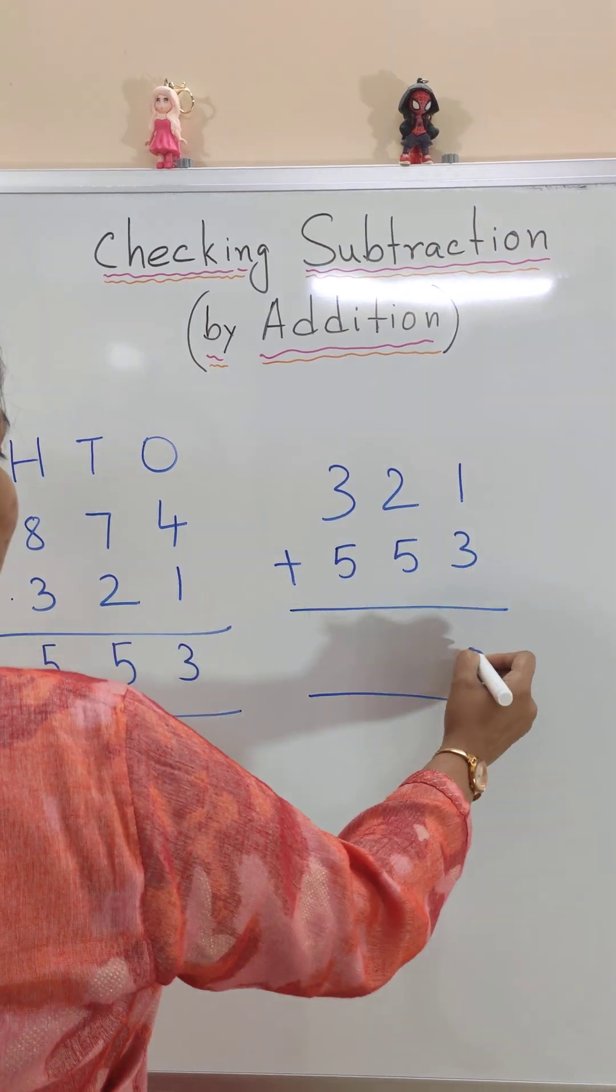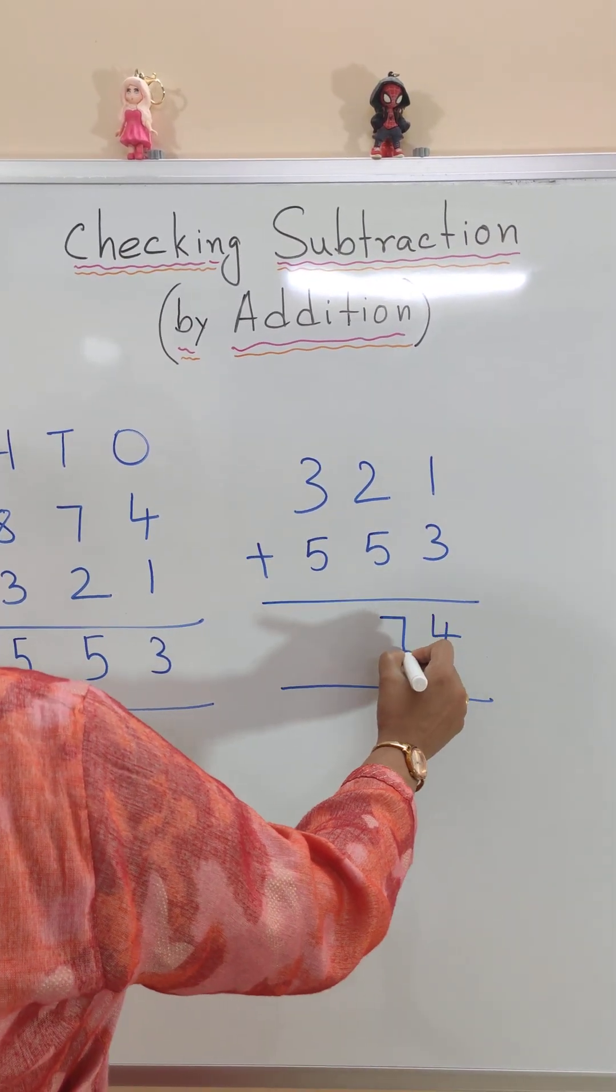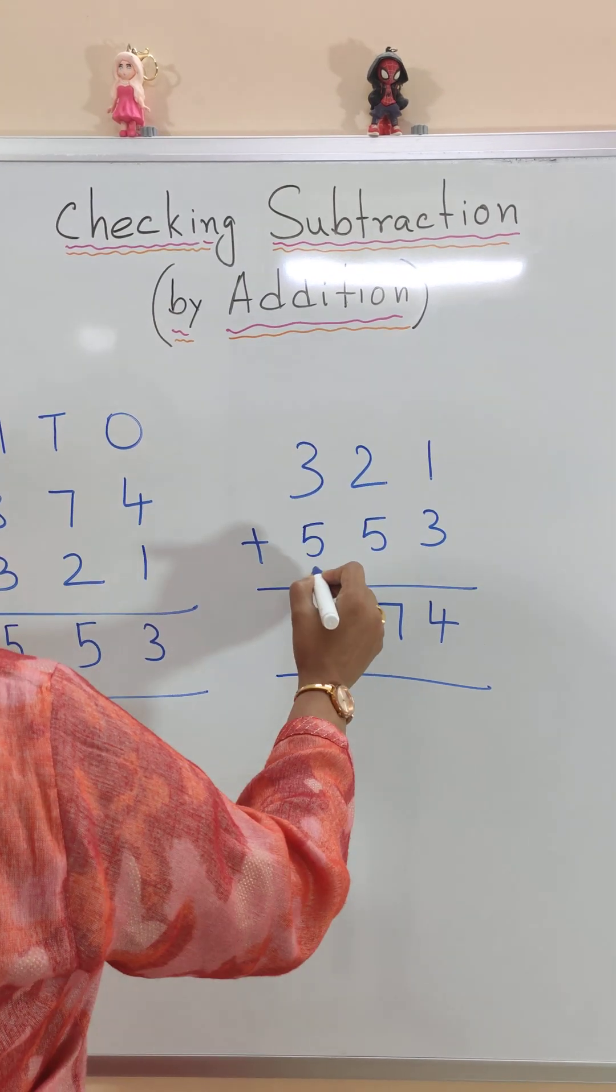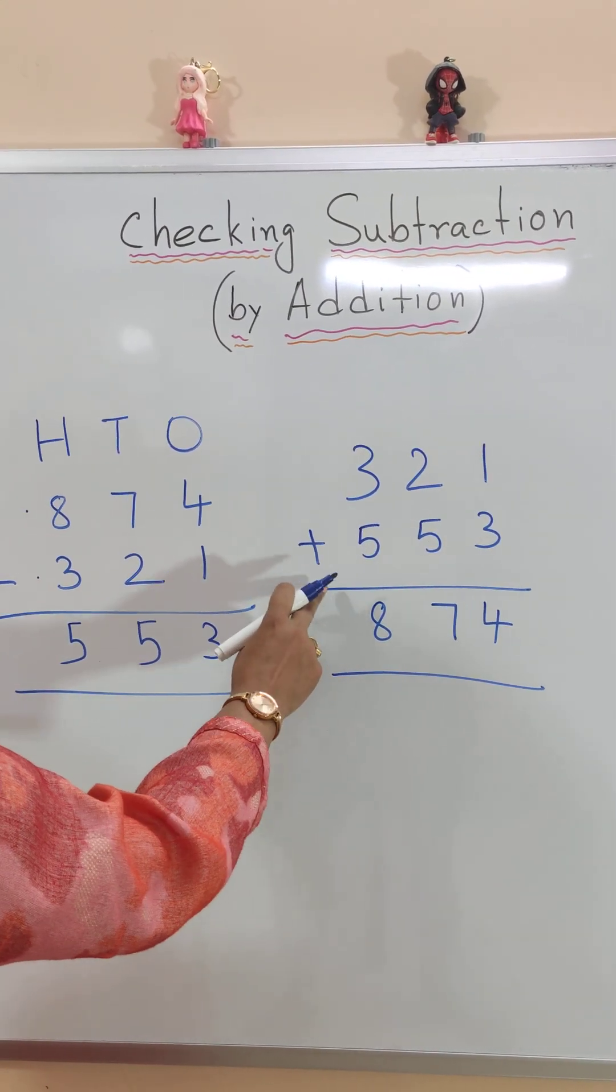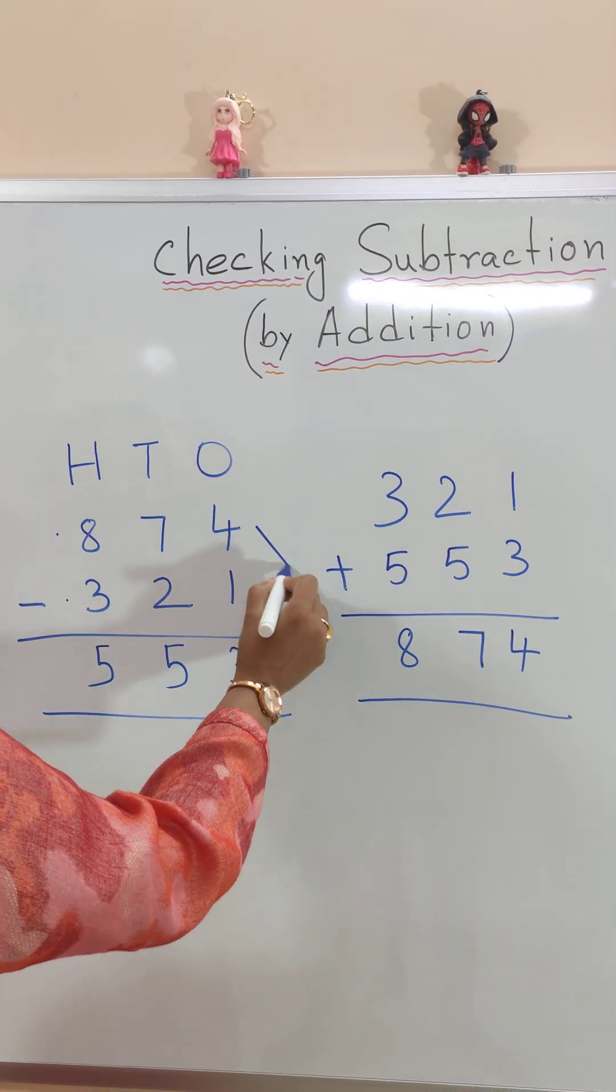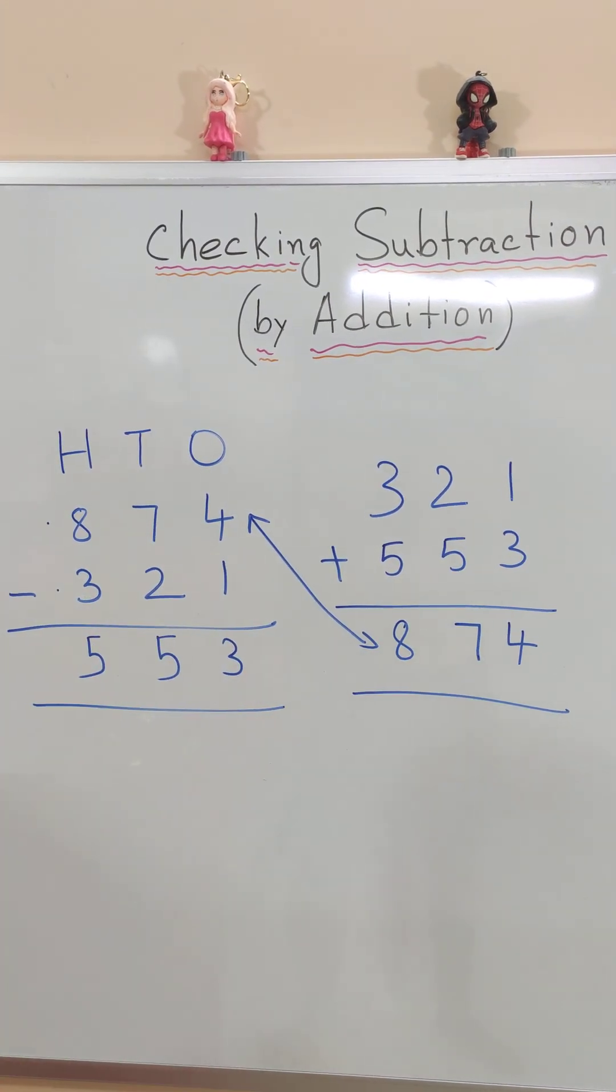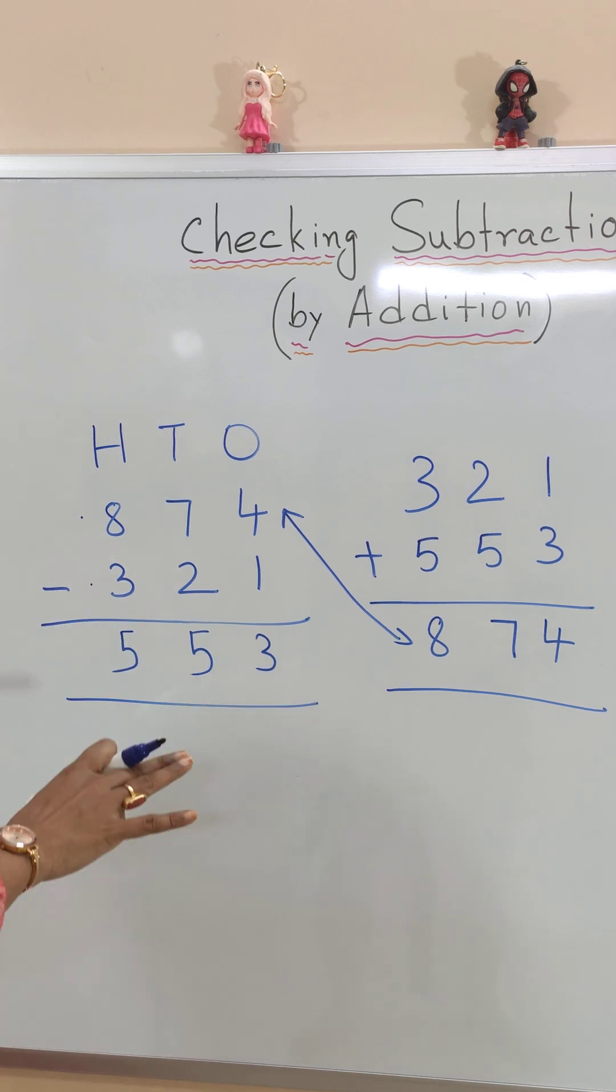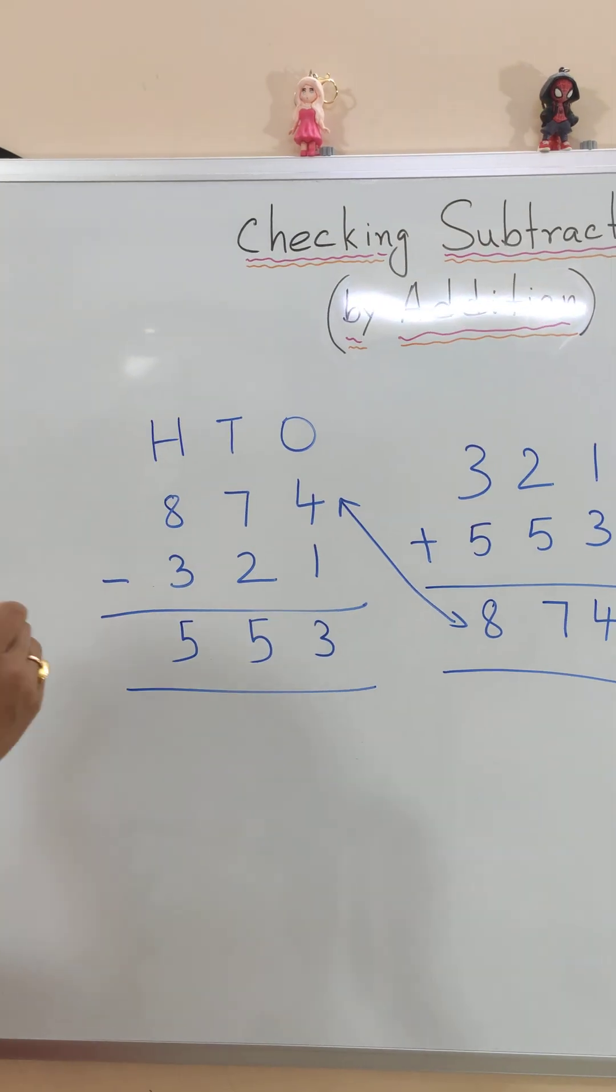1 plus 3 is 4. 2 plus 5 is 7. And 3 plus 5 is 8. So we see after adding we get 874 which is matching to this. Both the numbers are 874. From here we come to know that we did the correct subtraction.